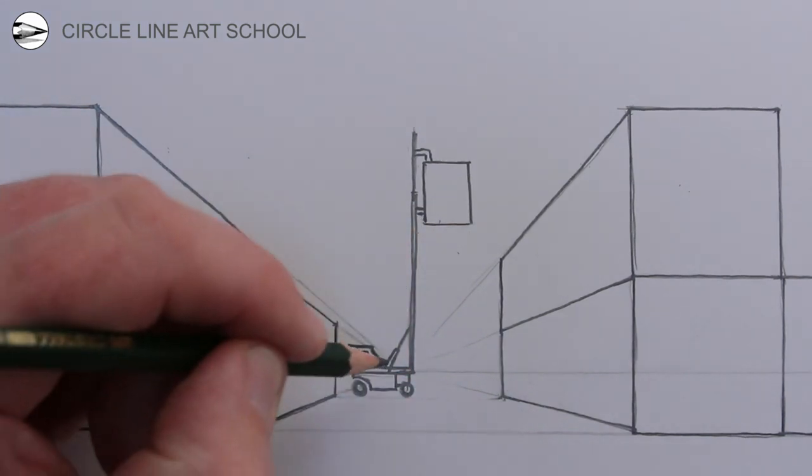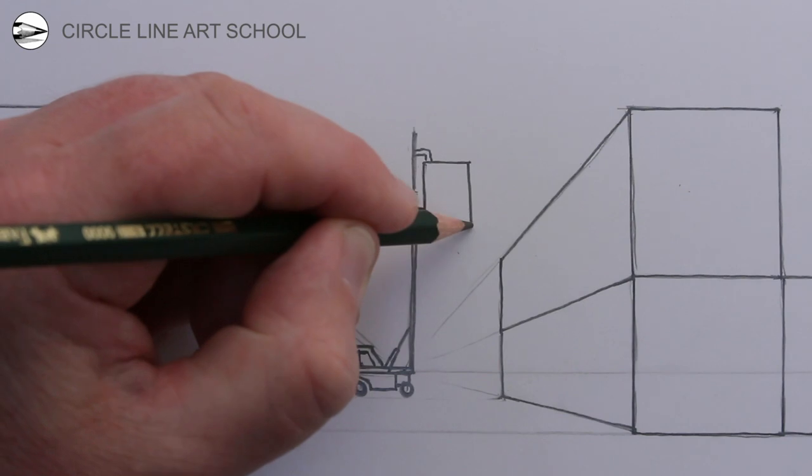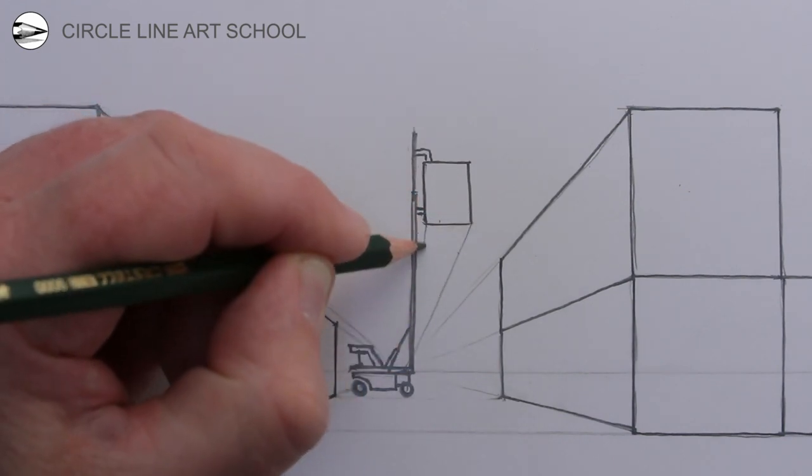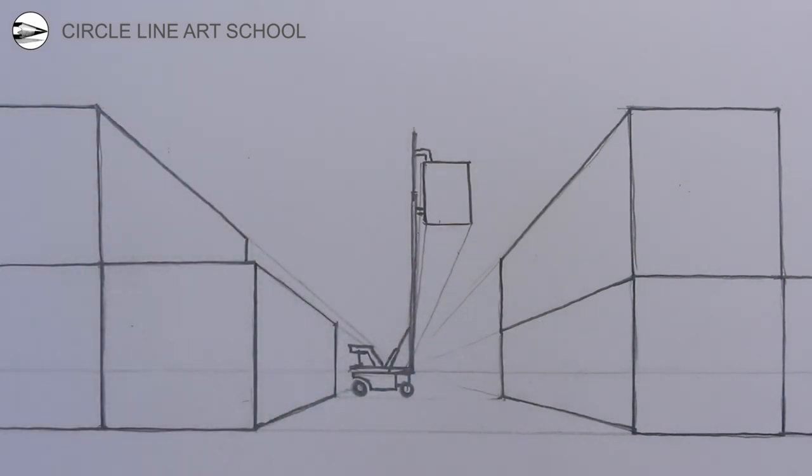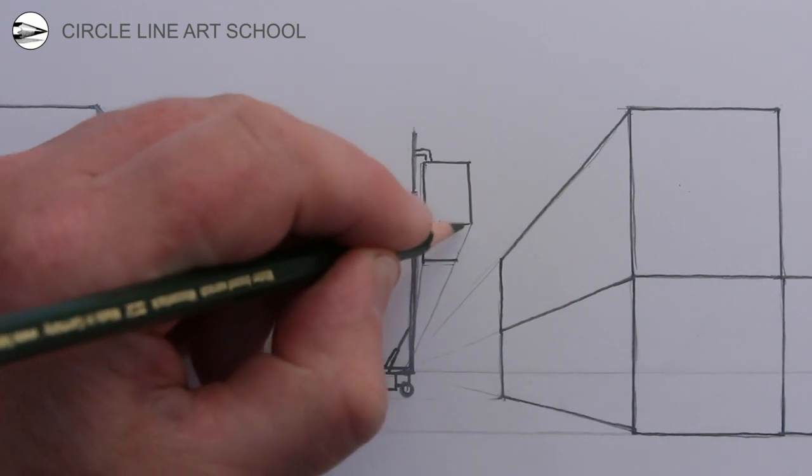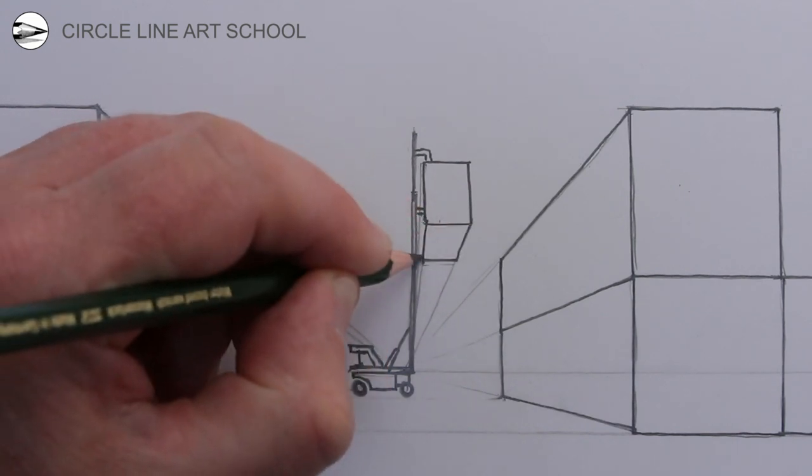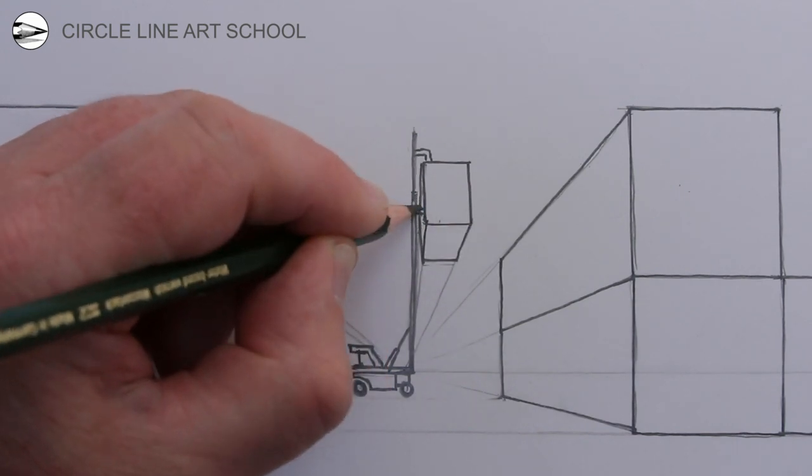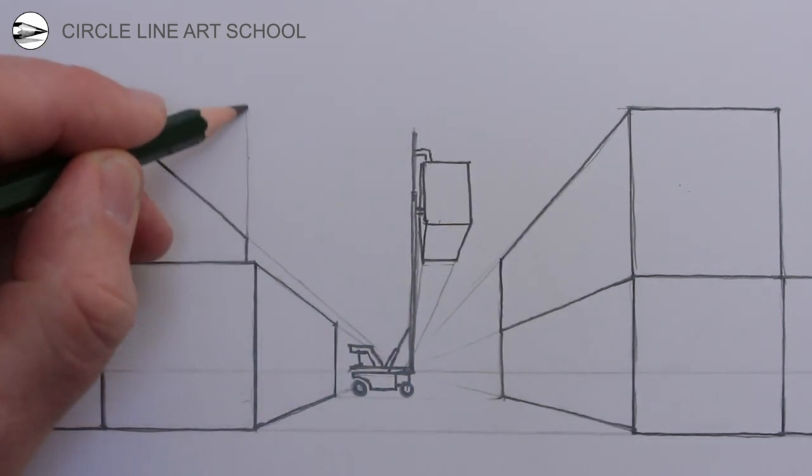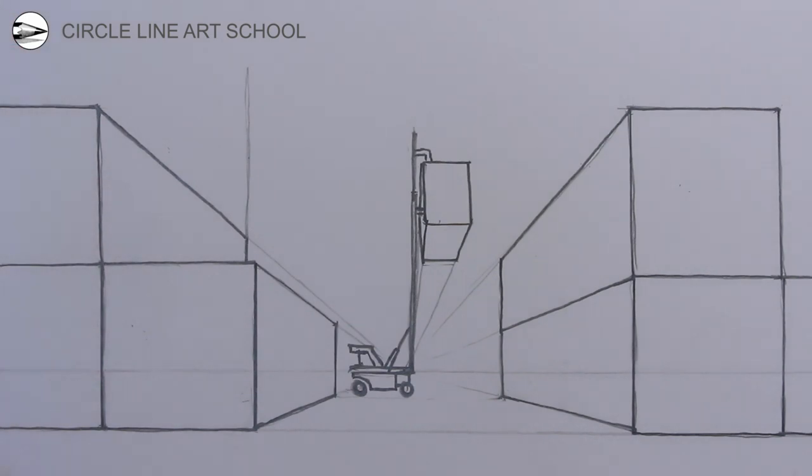Next we can use the vanishing point which is now behind the truck in my drawing, to work out the perspective lines for this new container which is up in the air. For your drawing you could add more containers in the distance. Remember that as the containers get further away from us, the viewer of the image, they will be smaller in size.